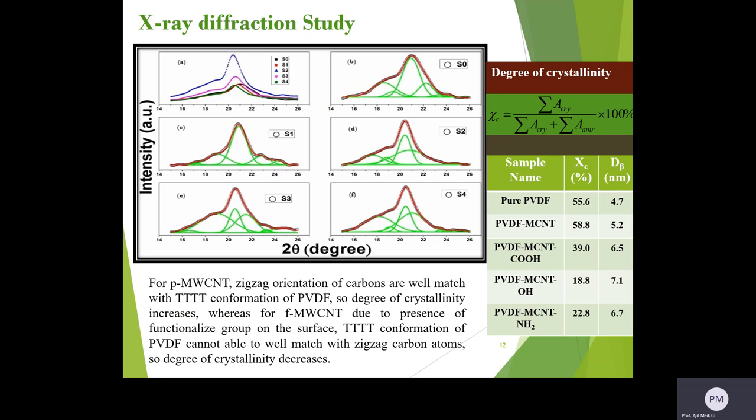The intensity ratio I-alpha by I-beta and I-gamma by I-beta reduces from 0.37 to 0.19 and 1.25 to 0.81, indicating that the addition of functionalized MWCNT allows arranging polar beta phase compared to non-functionalized MWCNT.